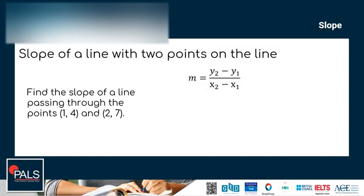Let's try calculating the slope of a line with two points on the line — meaning the given is two coordinate points. The instruction is: find the slope of a line passing through the points (1, 4) and (2, 7). To calculate, let us use the formula M equals y sub 2 minus y sub 1, all over x sub 2 minus x sub 1.